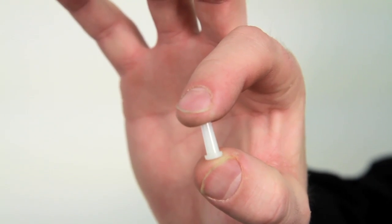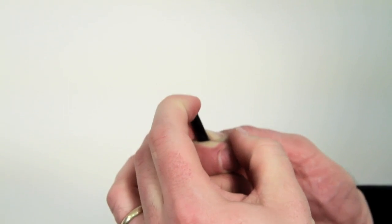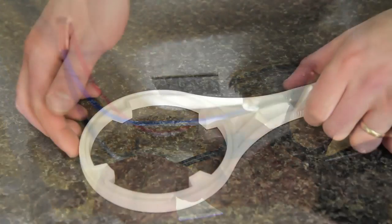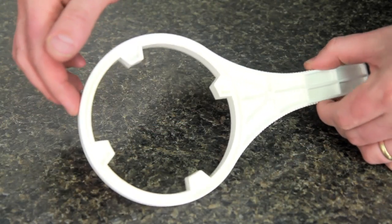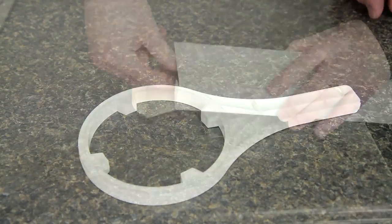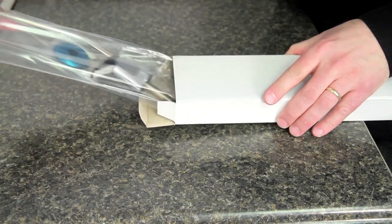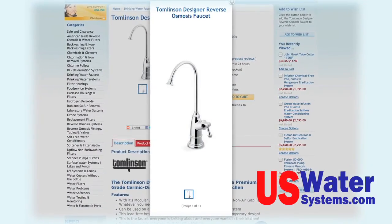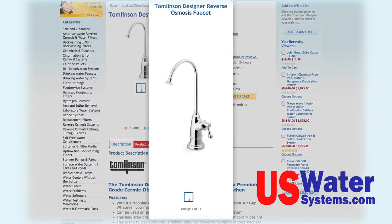This is the tube stiffener that will go into the end of the drain line that will be inserted into the saddle. Also included with your RO is a filter wrench for the filter housings. Your system will be shipped with a standard RO faucet. You can upgrade your faucet at www.uswatersystems.com.